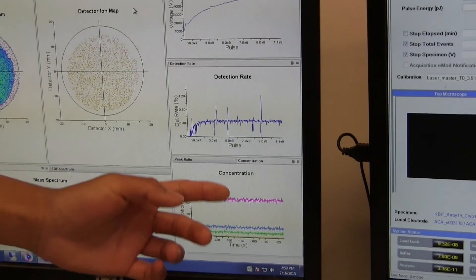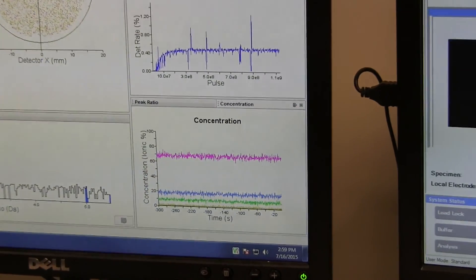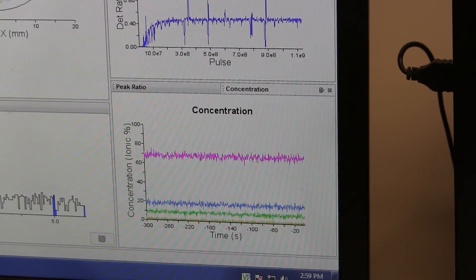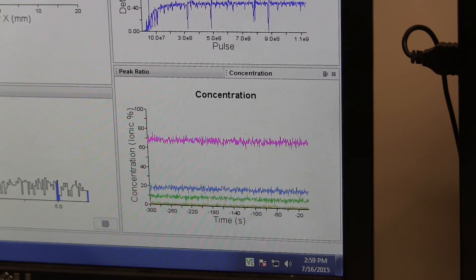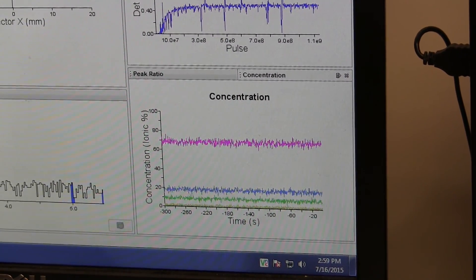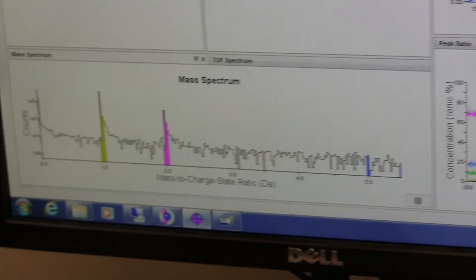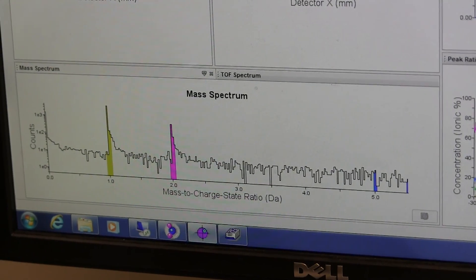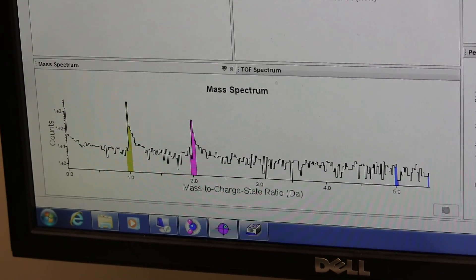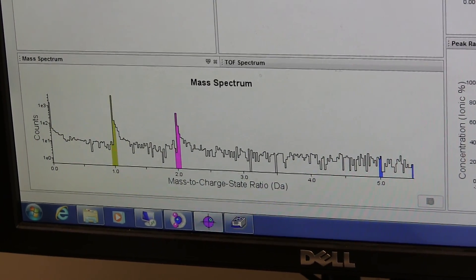And in order to steadily ionize the entire tip, you have to slowly increase that voltage. Alongside that, you have your concentration, which is basically the concentration of your specific ions that are flying off your specimen and hitting that detector plate. As well as your mass spectrum, where you can see your mass to charge ratio, as we said earlier, and the number of times that specific mass to charge ratio is being detected on that plate.